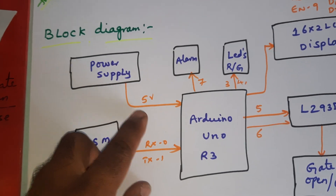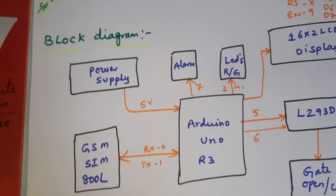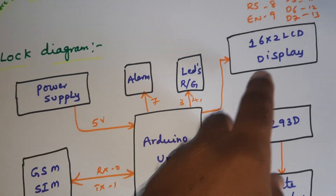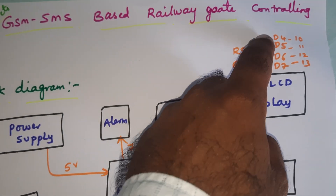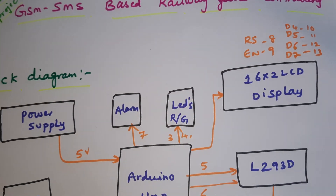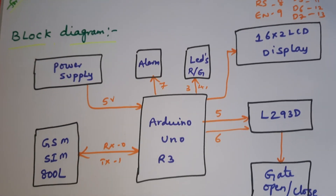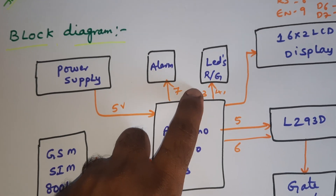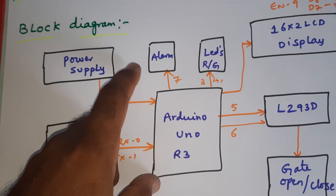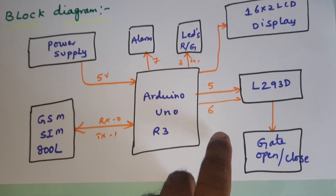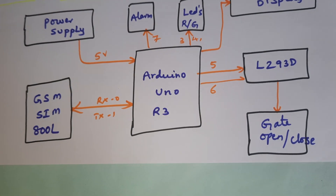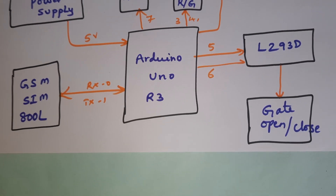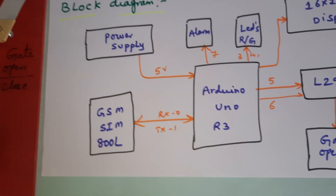We are using a 0 to 9 volts adapter power source and a 16x2 LCD display with pins RS, Enable, D4, D5, D6, D7 on pins 8 through 13. One red LED and one green LED are connected on pins 3 and 4. An alarm is connected to pin 7. An L293D driver IC is connected with a 555 timer for the gate open/close system.